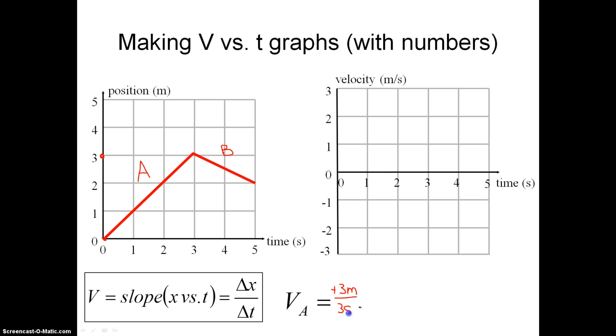So the change in time is 3 seconds. And so the velocity on average over those first 3 seconds is positive 1 meter per second. Now remember, to show that it has that same consistent velocity over those 3 seconds, we need to draw a flat horizontal line at 1 meter per second over 3 seconds.